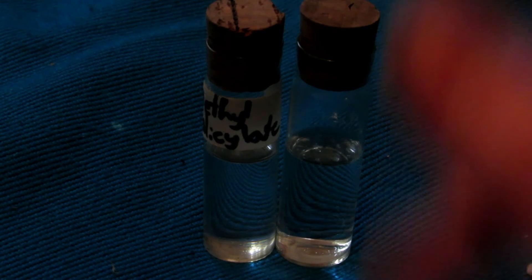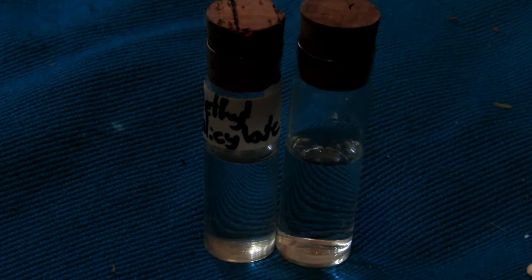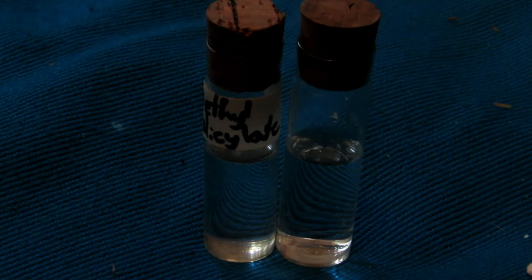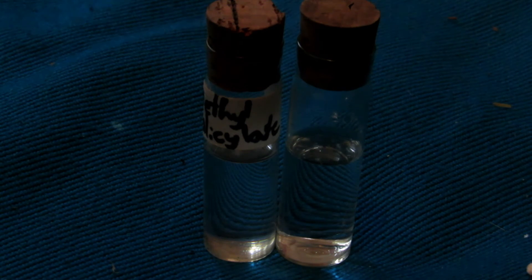We're going to use this to make something called smash glow crystals. Most smash glow crystals are really convoluted and complicated to make, and the chemicals aren't commonly available. However, this methyl salicylate was made from aspirin and other household materials.